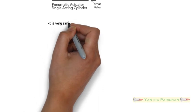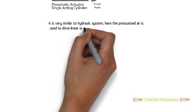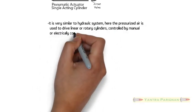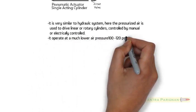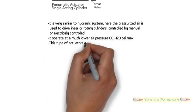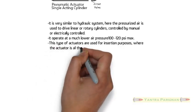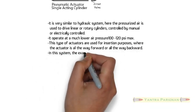It is very similar to hydraulic systems. Here the pressurized air is used to drive linear or rotary cylinders, controlled by manual or electrically controlled valves. It operates at a much lower air pressure, 100 to 120 pound force per square inch maximum. This type of actuator is used for insertion purposes where the actuator is all the way forward or all the way backward.